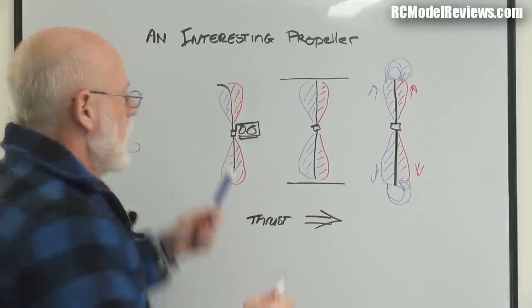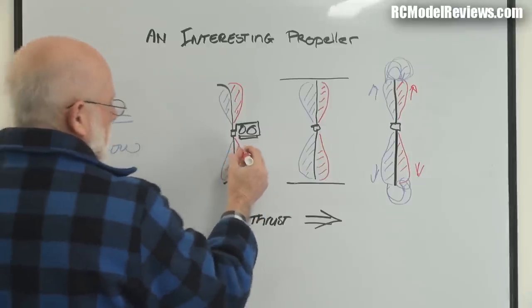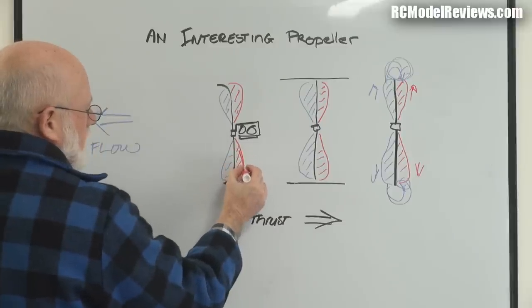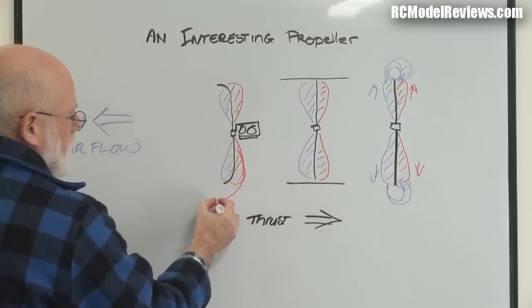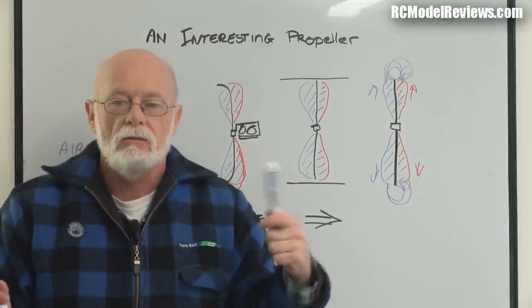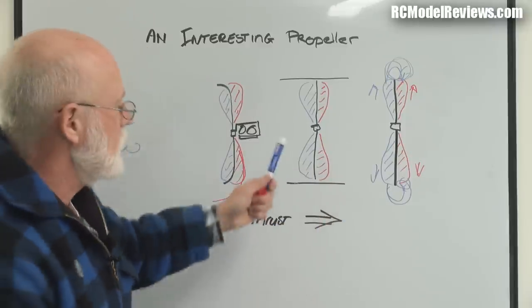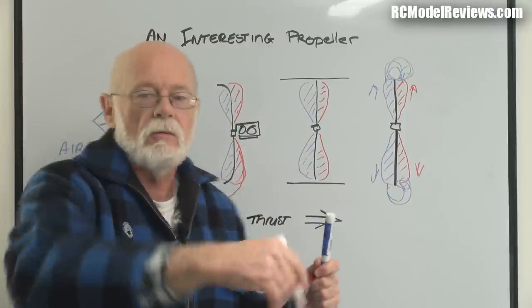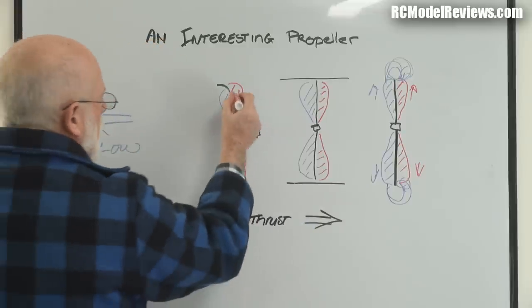In this case with the curved tip, we have an interesting situation. The low pressure air will follow that curve due to a thing called the Coanda effect. You can go look it up, but it means that air traveling over a curve tends to follow the curve rather than just breaking free.